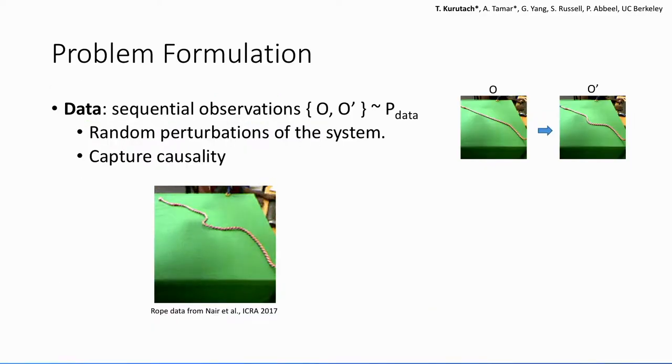So let's first try to formulate this problem and we'll see how we can solve it. Here we have this data of a robot randomly perturbing the rope. As you can see, it's important to note that the robot has no goal in mind.